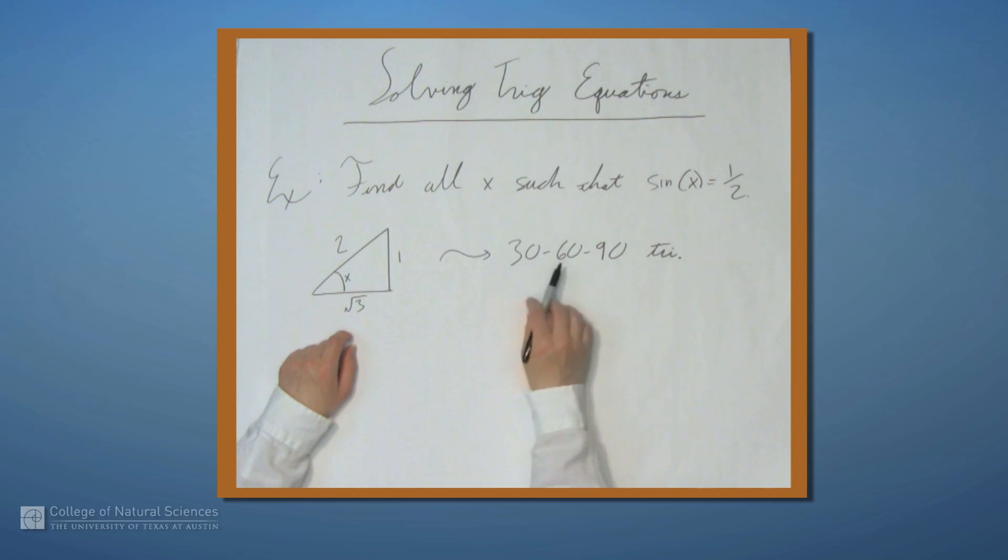Now you also have to know where these angles go. But this is actually pretty straightforward because the smallest angle, which in this case is 30, is always going to be opposite the smallest side. So that means, well 1 is the smallest side, it's smaller than 2 or square root of 3. So the angle x is the 30 degree angle. So that means that x is, and let's put this in radians, π over 6.